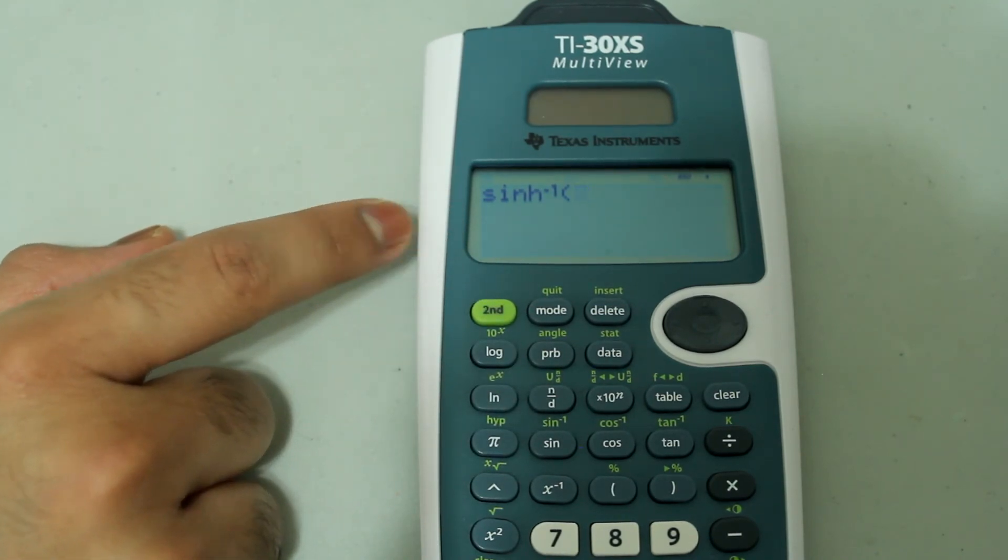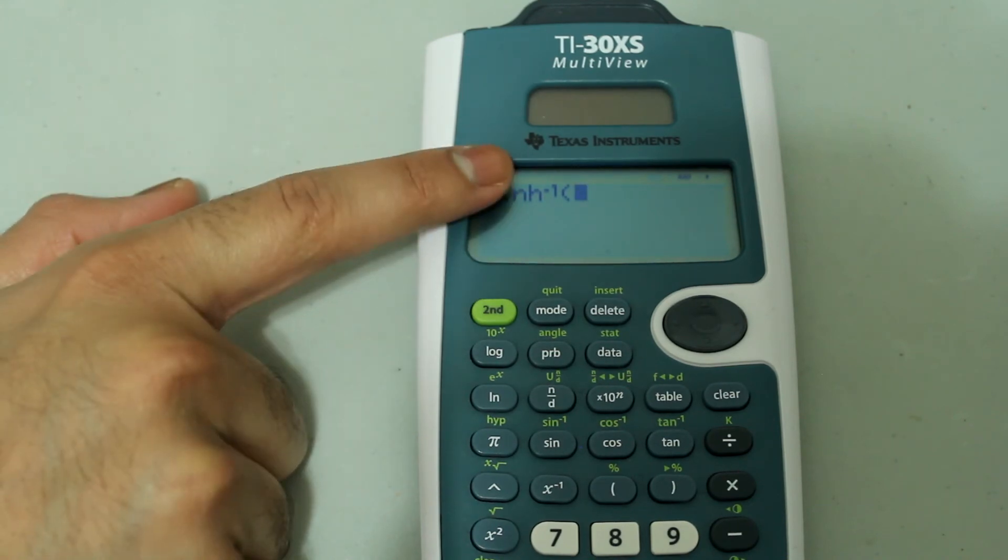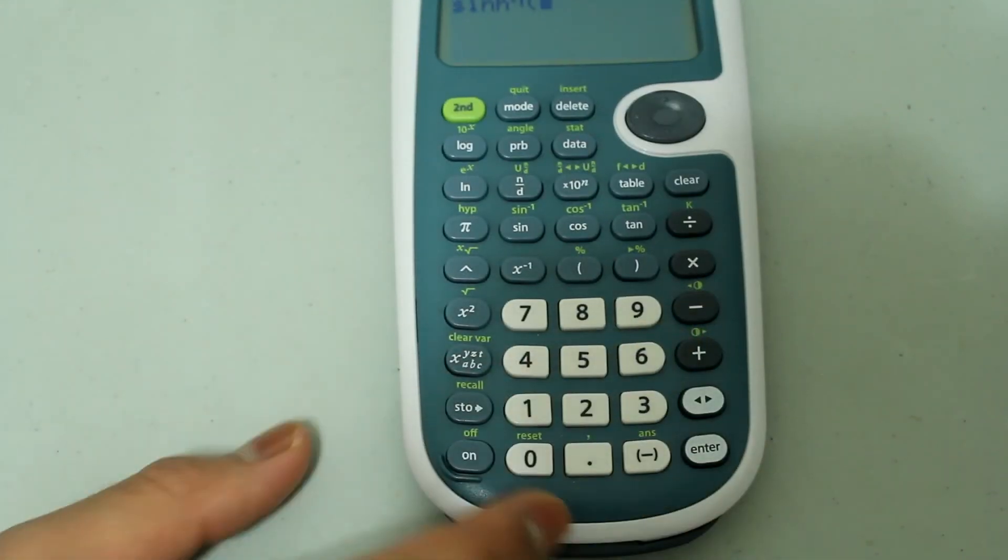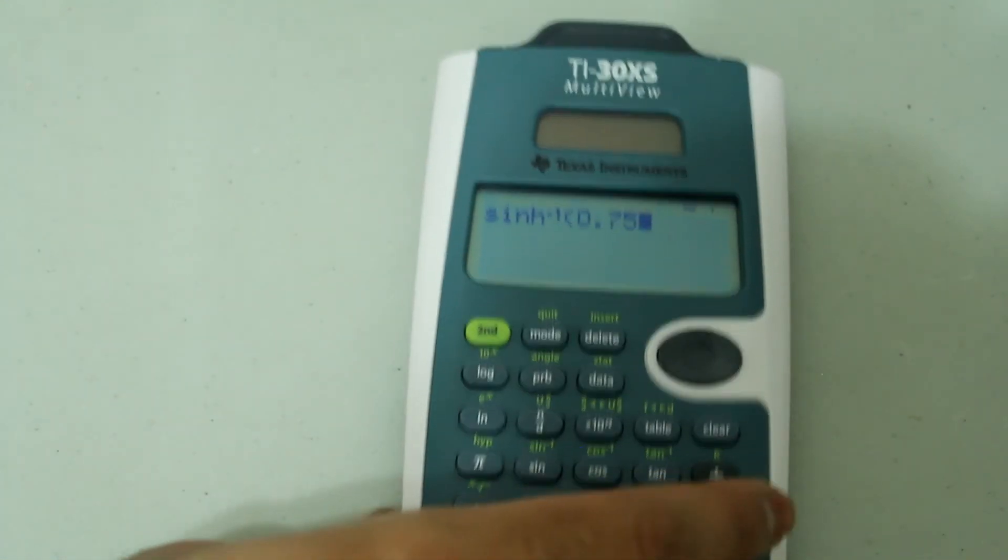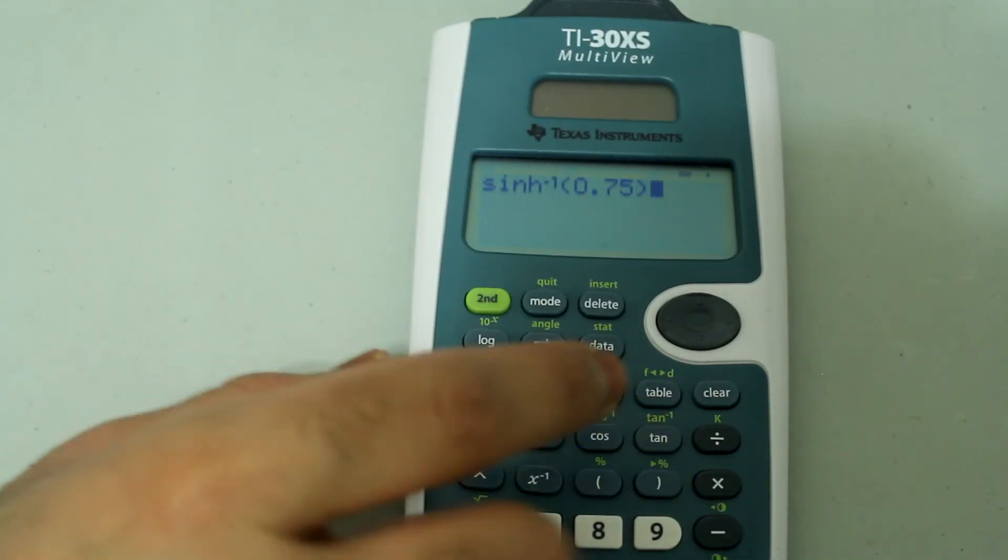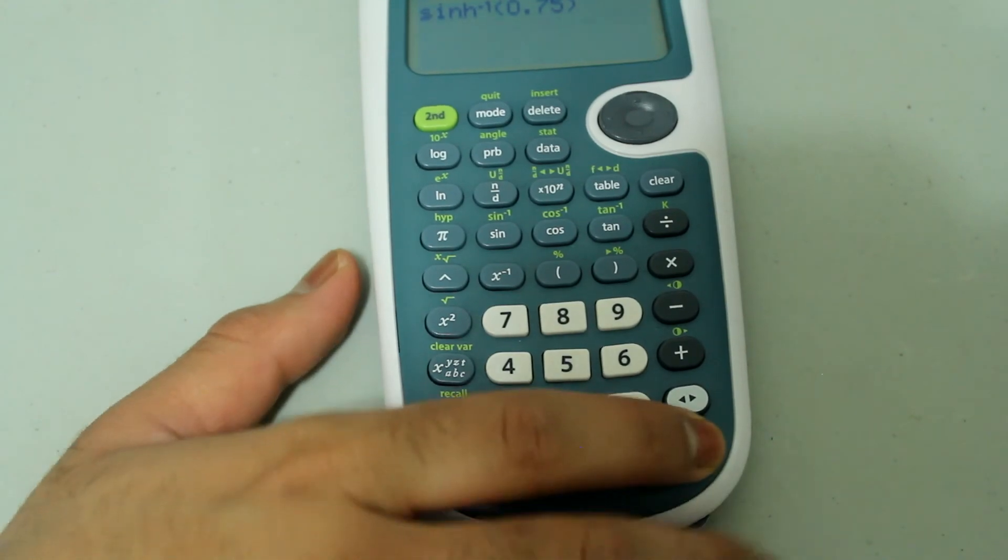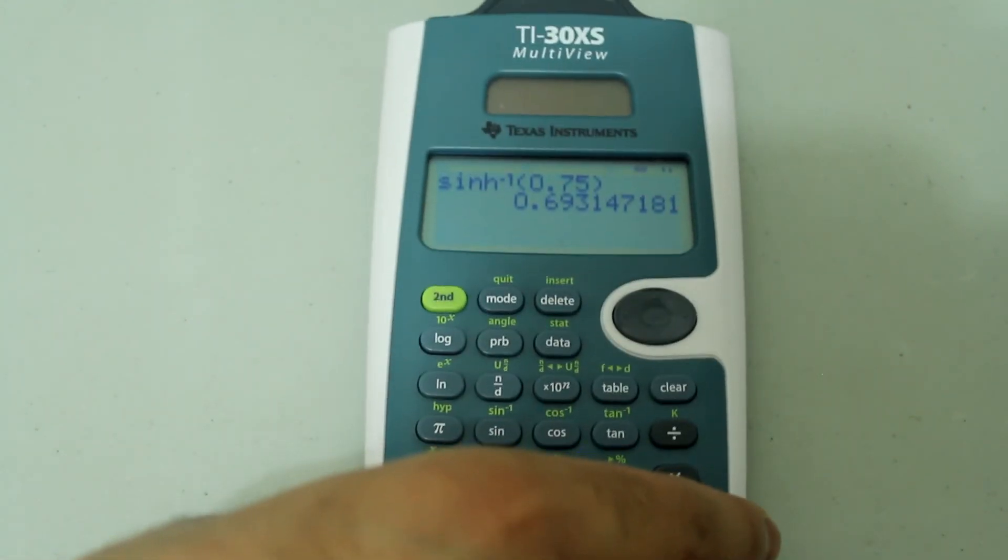Now I'm going to type in 0.75 on the inside. So 0.75, and then close the parentheses and press ENTER, and I get the answer as